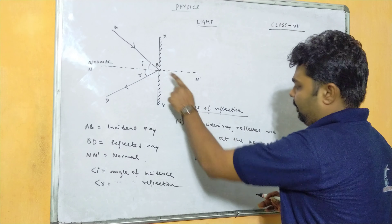If asked what type of image is formed by a plane mirror, the answer is a virtual image. Virtual images are those images which cannot be obtained on a screen.